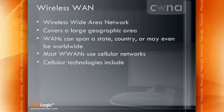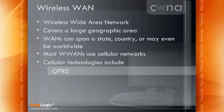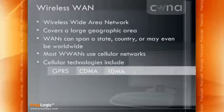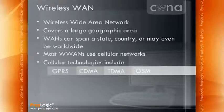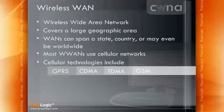Cellular technologies include GPRS, CDMA, TDMA, and GSM. These are not covered in detail in the CWNA program, but you do need to know that a wireless WAN will usually be implemented using cellular technologies.